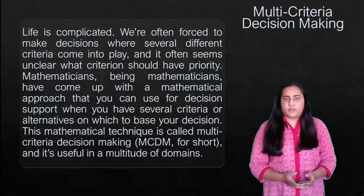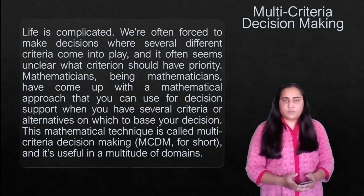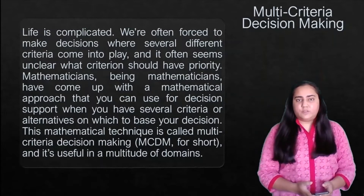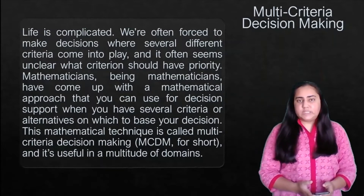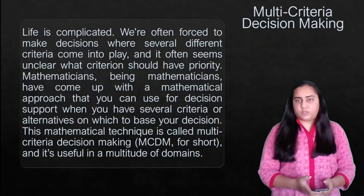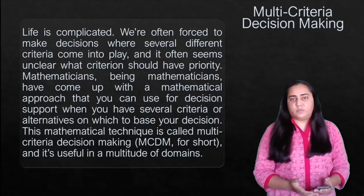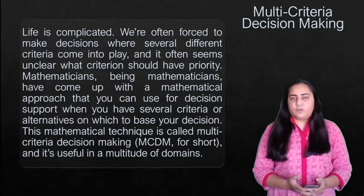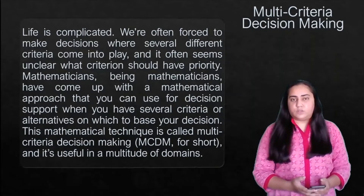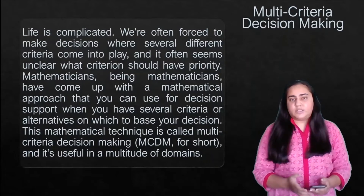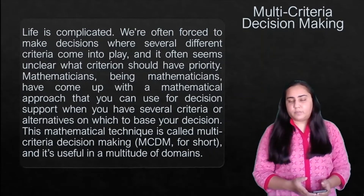Life is complicated and we are often forced to make decisions where several different criteria come into play, and it often seems unclear what criterion should have priority over others. Mathematicians have come up with a mathematical approach for decision support when you have several criteria or alternatives on which to base your decision. This technique is called MCDM, which is multi-criteria decision making.